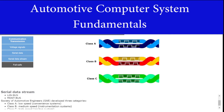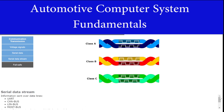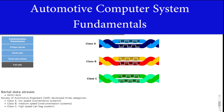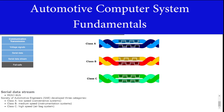The serial data stream is information sent over data communication lines such as UART, CAN bus, LIN bus, and MOST bus to other control modules or to the diagnostic port. The Society of Automotive Engineers, SAE, has developed three categories for in-vehicle networks. Class A serial data is a low speed communication network used on most convenience systems such as the audio system. Class B serial data is a medium speed communication network used in the instrumentation system. Class C serial data is a high speed communication network used in airbag systems to provide real-time data.